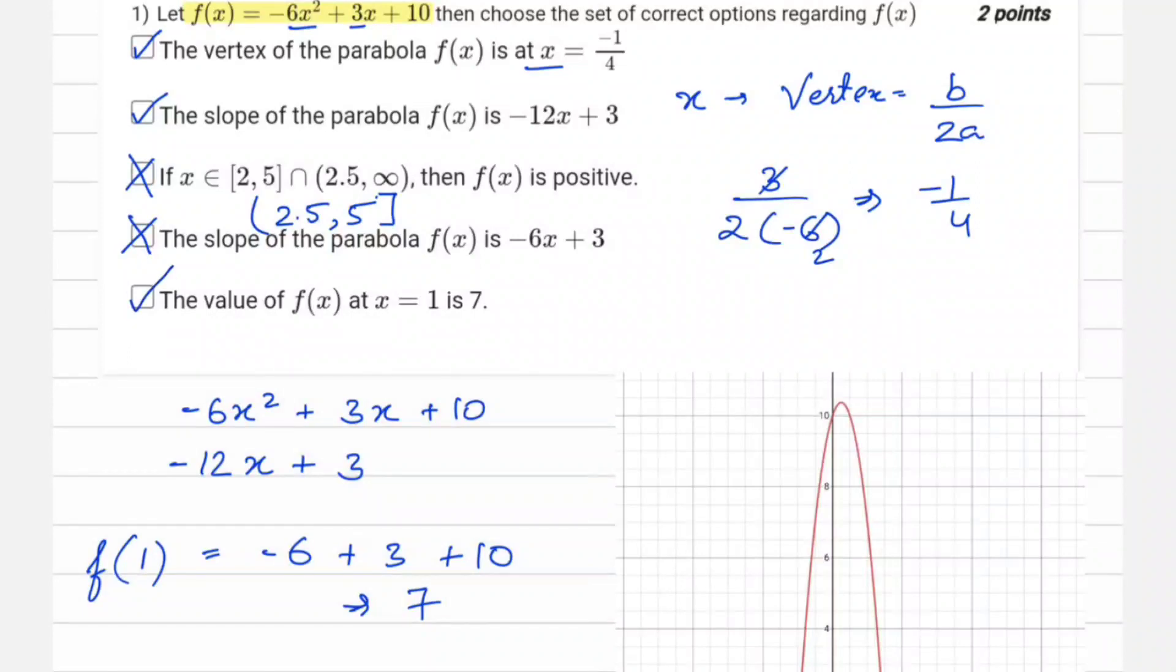So our last option is also correct. So our answer is going to be A, B, and D. Do check your options because they are jumbled up.